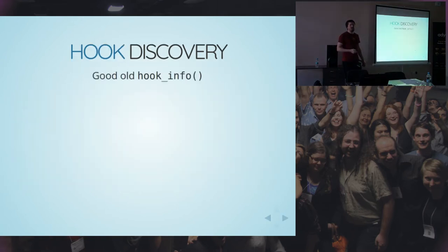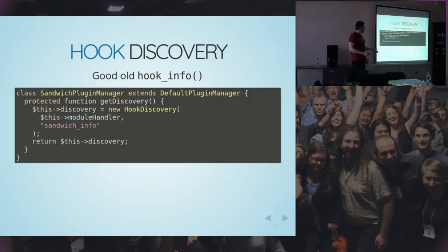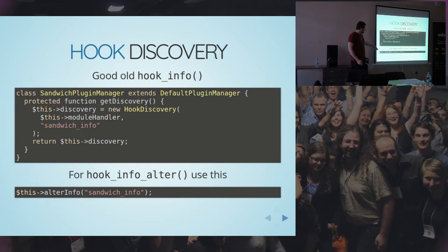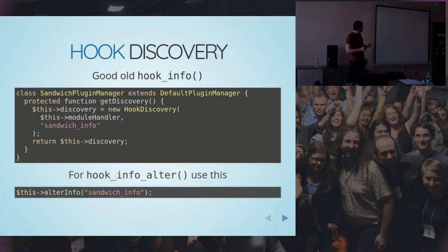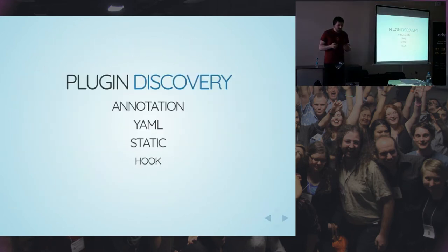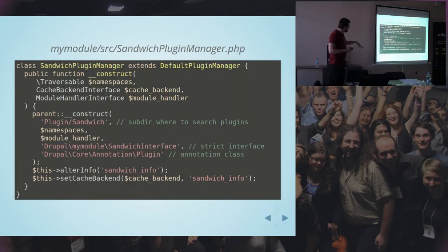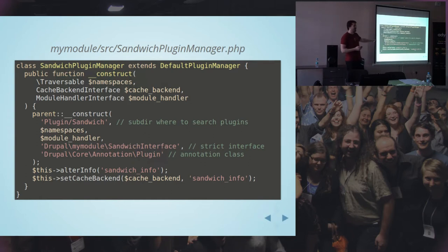Hook discovery — это старые добрые hook_info, которые все так не любят из Drupal 6. Передаём hook_discovery модуль-хендлер — нужен для работы hook_discovery — и название нашего hook_info. Дальше мы ещё можем добавить alter, чтобы он работал. Alter мы можем использовать независимо от hook_info. Самая стандартная вариация для почти всех плагинов в Drupal — это только annotation discovery и alter.